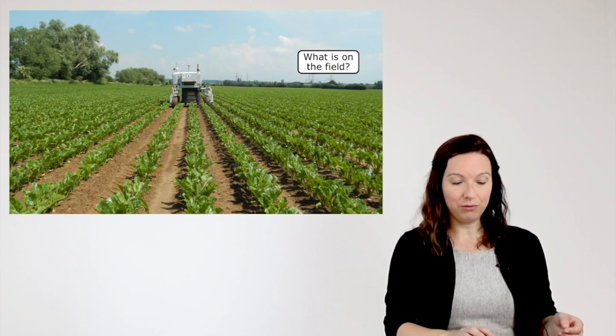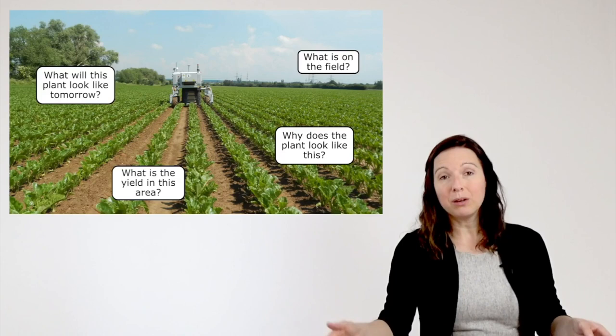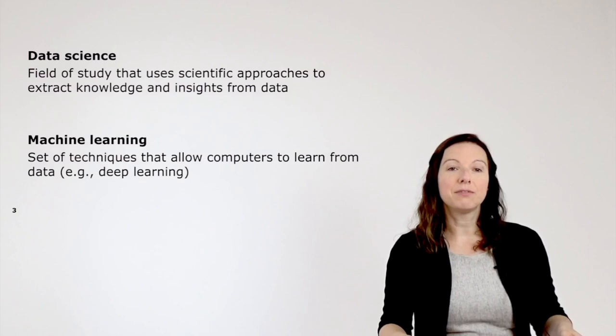When we look at the following scenario here we can ask for example what is on the field, or we can ask what is the yield in this specific area, or we can ask what will this plant look like tomorrow, but we can also ask why does a plant look like this. One way to approach these questions is data science and machine learning.